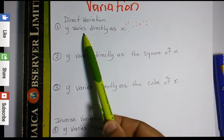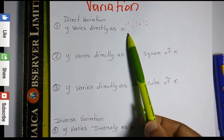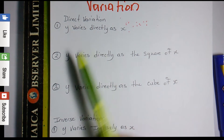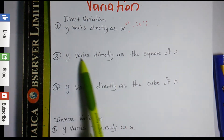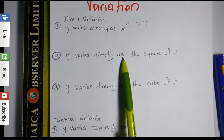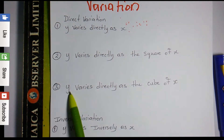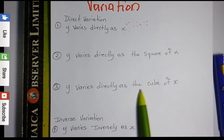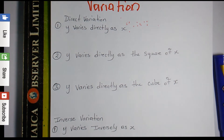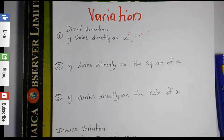For direct variation, the first phrase is 'y varies directly as x,' the second is 'y varies directly as the square of x,' and the third is 'y varies directly as the cube of x.' We're going to look at direct variation first and I'll show you how to convert these variation word phrases into equations.